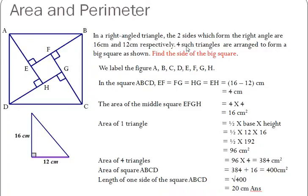Four such triangles are arranged to form a big square as shown. So four such triangles are drawn to form a square like this. And we have to find the sides of the big square, right, the length of the big square.